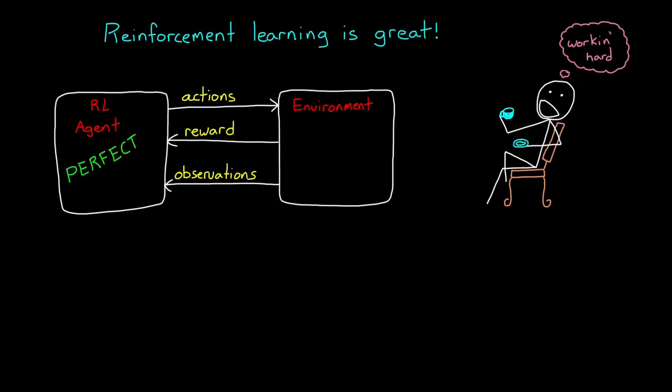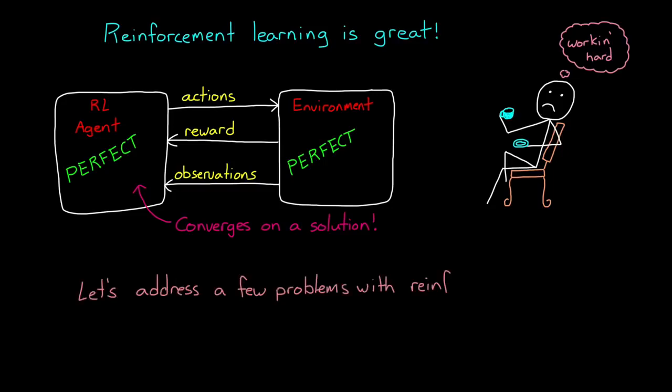Unfortunately, even if you set up a perfect agent and a perfect environment and then the learning algorithm converges on a solution, there are still drawbacks to this method that we need to talk about. So in this video, I'm going to address a few possibly non-obvious problems with RL and try to provide some ways to mitigate them. Even if there aren't straightforward ways to address some of the challenges that you'll face, at the very least it'll get you thinking about them.